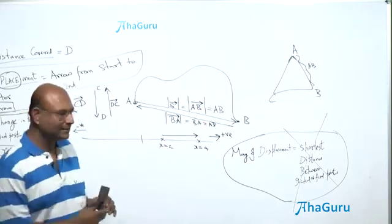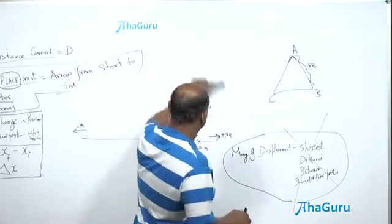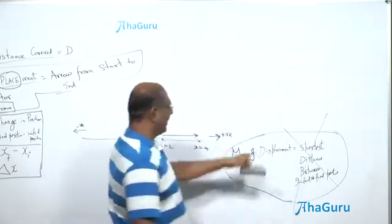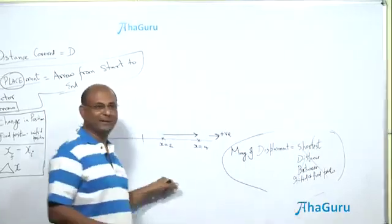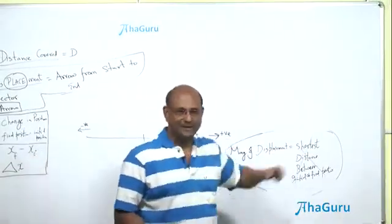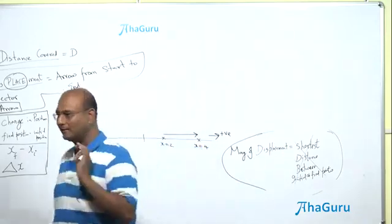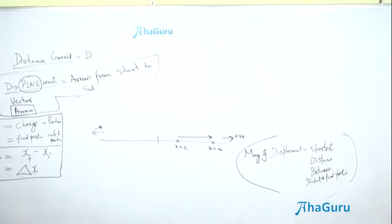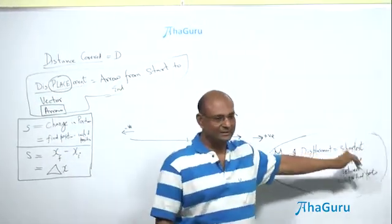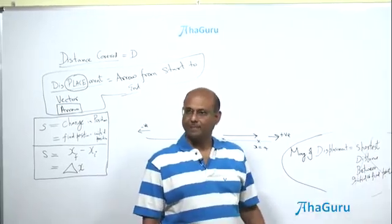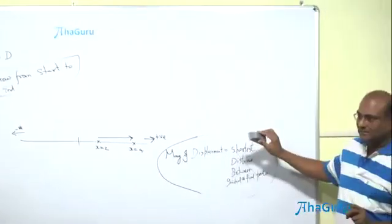Is that understood? In school, many times you will be asked to define displacement. What they mean is they want you to define the magnitude of displacement, because your school textbook may sometimes say displacement is the shortest distance between start and end — which is wrong. But if you want marks, please write it. If you feel it's wrong, write: magnitude of displacement is the shortest distance between start and finish — then it is correct. Displacement itself is not a distance, but magnitude of displacement is a distance.